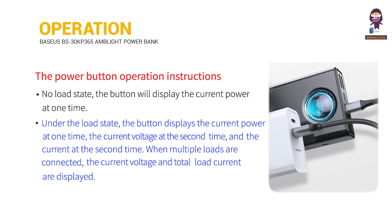Under the Load State, pressing the button displays the current power the first time, the current voltage the second time, and the current the third time. When multiple loads are connected, the current voltage and total load current are displayed.